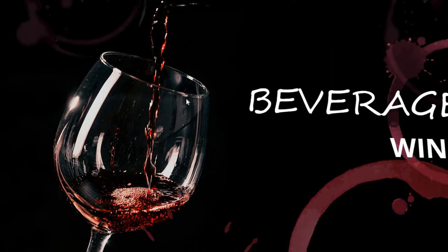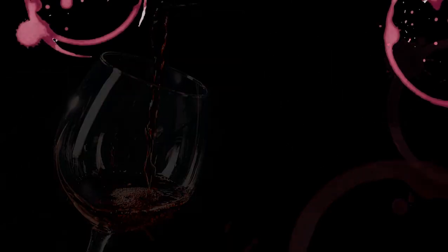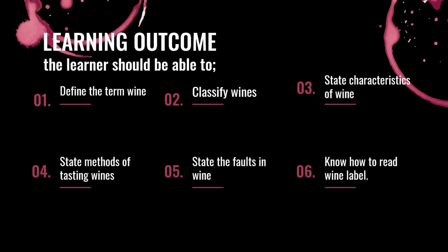Beverage: wines. At the end of this lesson, the learner should be able to define the term wine, classify wines, state the characteristics of wines, state methods of tasting wines, state the faults found in wines, and know how to read wine labels. When this lesson ends, make sure as a learner you are able to know all of this.